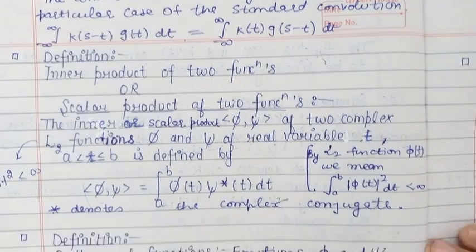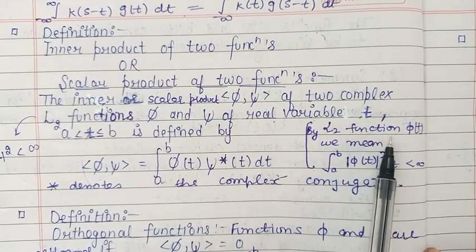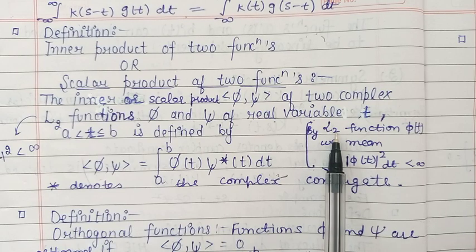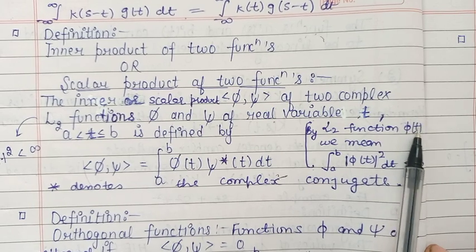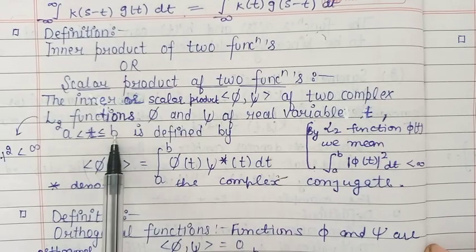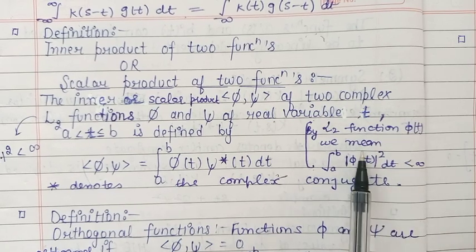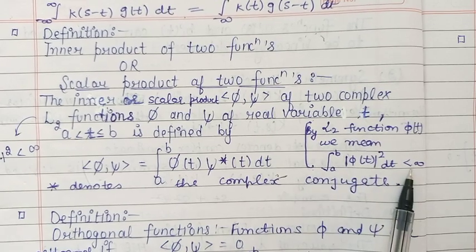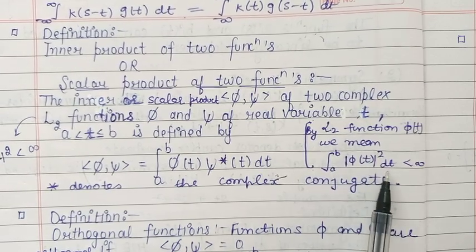Next, we define the inner product or scalar product of two functions. Before that, let us define a square integrable function, denoted by the symbol L². Consider a function phi, which is a function of a real variable t, where t belongs to the closed interval [a, b]. A function phi is called square integrable if the integral of the square of the modulus of phi is finite — that is, the integral from a to b of |phi(t)|² dt is finite.